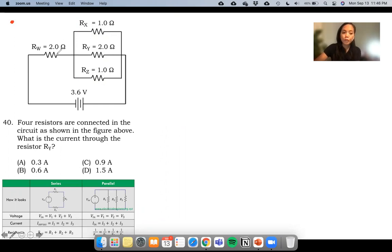This is number 40 on the LMAT sample exam. We have four resistors that are connected in the circuit as shown in the figure. What is the current that is flowing in this one?